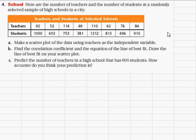So, problem number four. Here are the number of teachers and the number of students at randomly selected samples of high schools in a city.